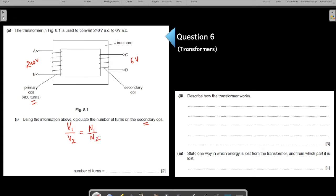So use the transformer equation which is V1 over V2 equals N1 over N2. What do you have to find? You have to find N2. So N2 will be equal to, input the values, 240 comes here.